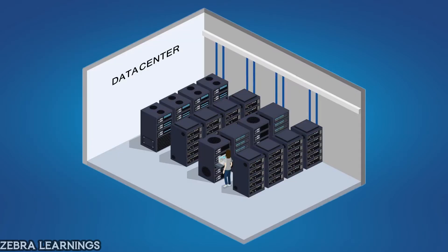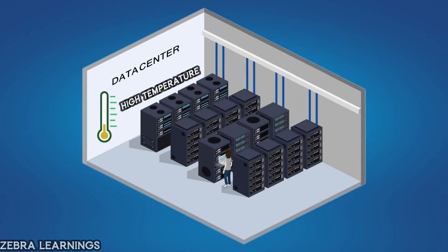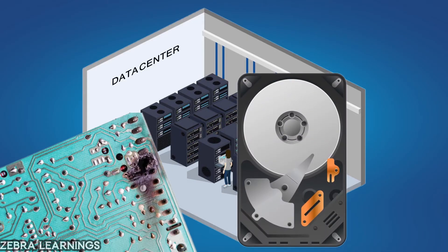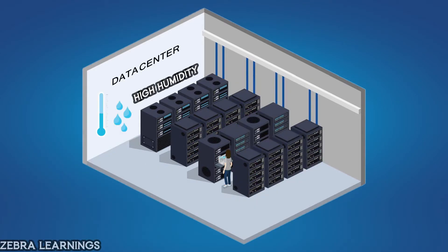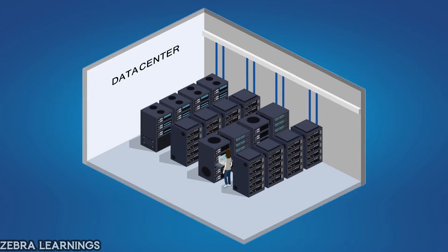Let's take data centers as an example. A data center is like the brain of a company — all its data are stored here. If a data center overheats, the performance of the equipment within it could slow down, and sometimes the whole data center might even shut down. The excess heat also increases the chances of damage to circuit boards and hard drives. Excessive humidity can lead to condensation, forming water droplets that might fall onto the electronic equipment, potentially causing damage. On the other hand, low humidity levels can increase static electricity, which can also damage sensitive equipment. These issues can result in significant financial losses for companies — according to estimates, data center-related issues cause billions of dollars in losses worldwide each year. To avoid these problems, data centers use PACs.